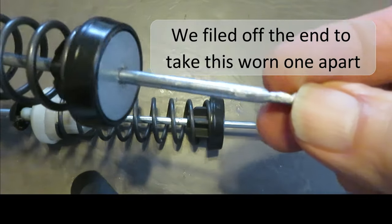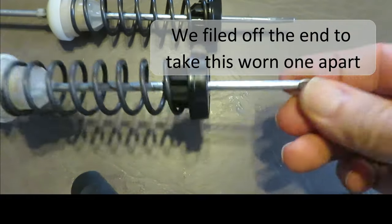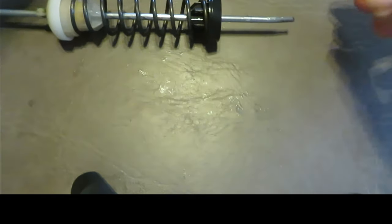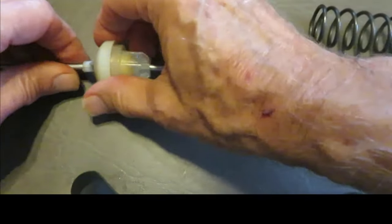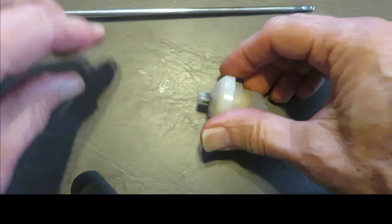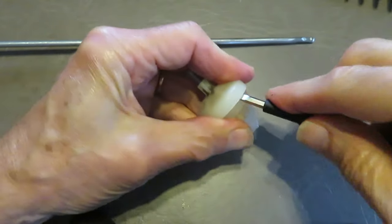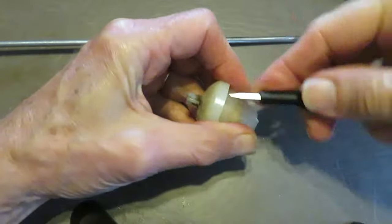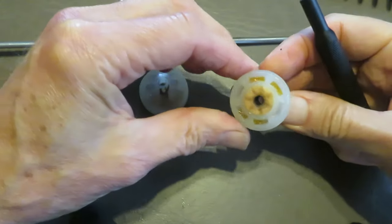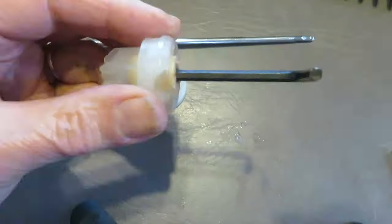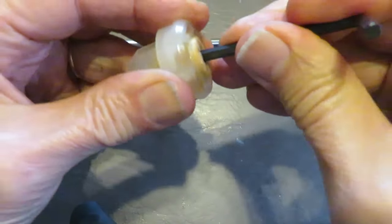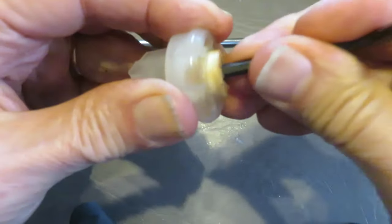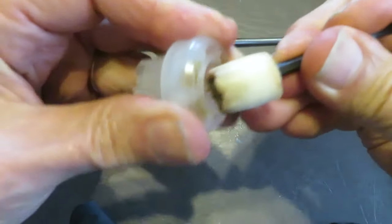We filed off that flattened end to take a quick look inside of one of these and see what's going on. This is the part that's failed. Pry off the cap. There's a little round foam plug inside here that's responsible for providing the grip on the rod.